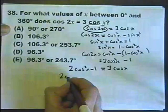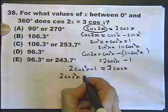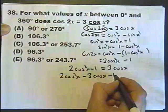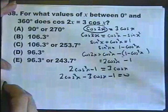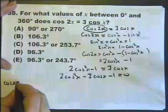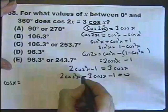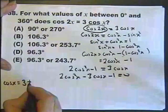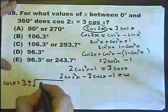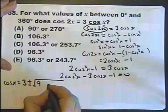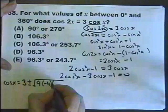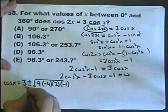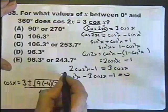I can rearrange it so it becomes a quadratic by subtracting 3 cosine x from both sides. Now I can use the quadratic formula: cosine x equals minus b — which is minus negative 3, making it plus 3 — plus or minus the square root of b squared, which is 9, minus 4 times a times c, all over 2a, which is 4.